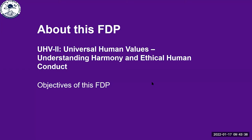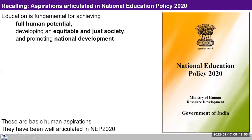Welcome everybody to this six-day faculty development program on Universal Human Values: Understanding Harmony and Ethical Human Conduct. If you look into the objectives of this FDP, it aligns to the NEP 2020 aspirations, which says education is fundamental for achieving full human potential, developing an equitable and just society, and promoting national development.